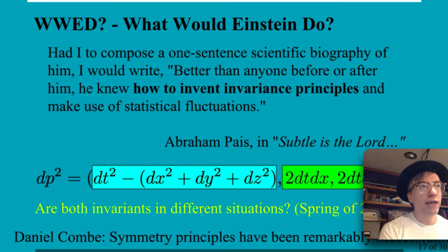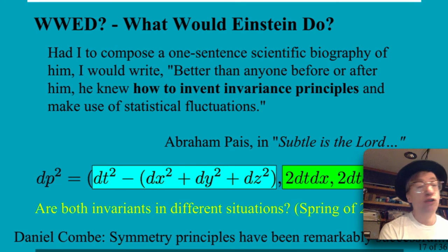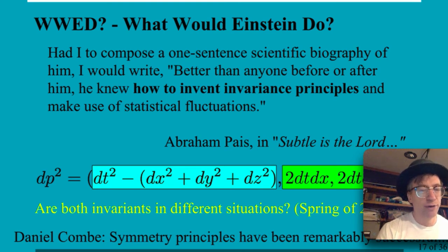Consider: space over time is velocity; space times space is area; space over space gives angles. But what is space times time? There's silence because it doesn't have a common name — yet it's just a different permutation. It has to play a role in physics; it can't simply never appear. So we are going to explore what I'm calling 'space times time' since there isn't already a common name for it.